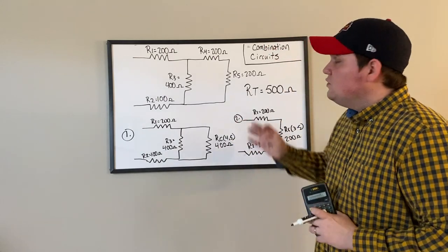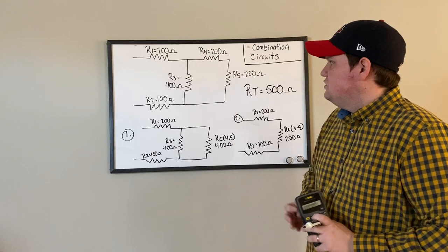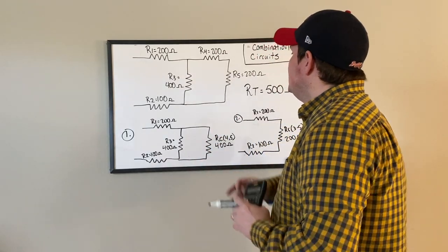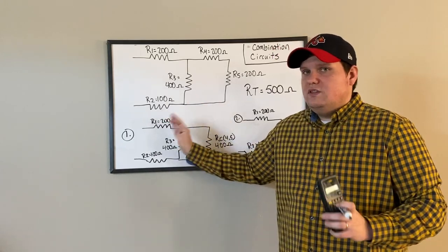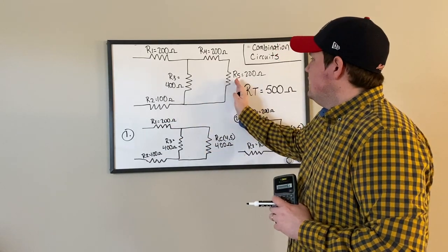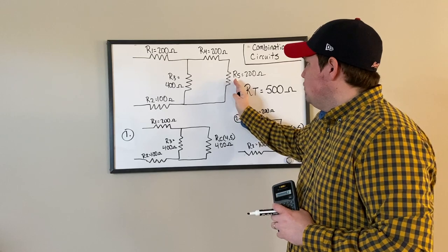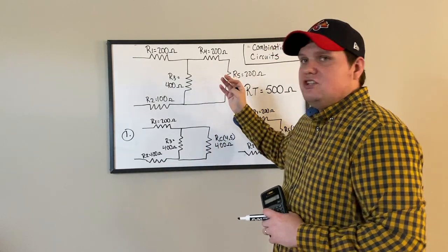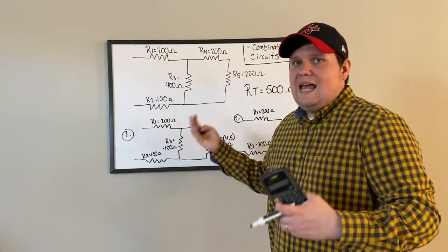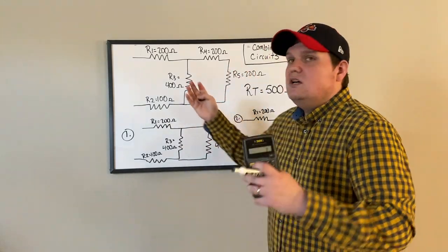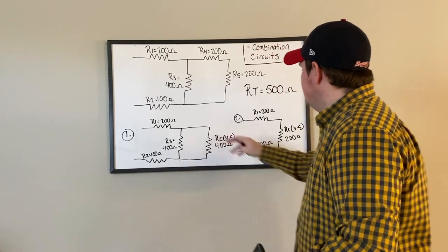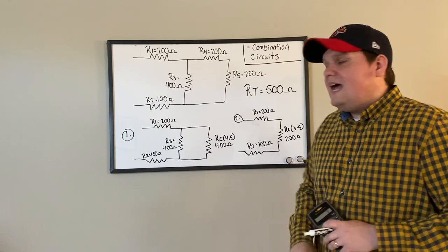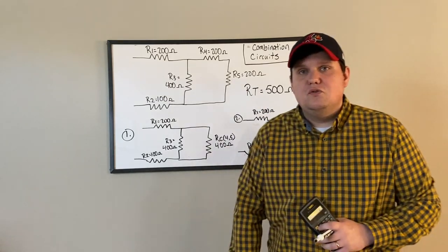That is all there is to working a combination circuit. No matter how large these circuits get, you always want to use this method — start at the end opposite of the source, take it branch by branch, break each branch down. If they're in series, add them; if they're in parallel, reciprocate them — until you arrive at either a series or parallel circuit, and then you can get your total resistance.